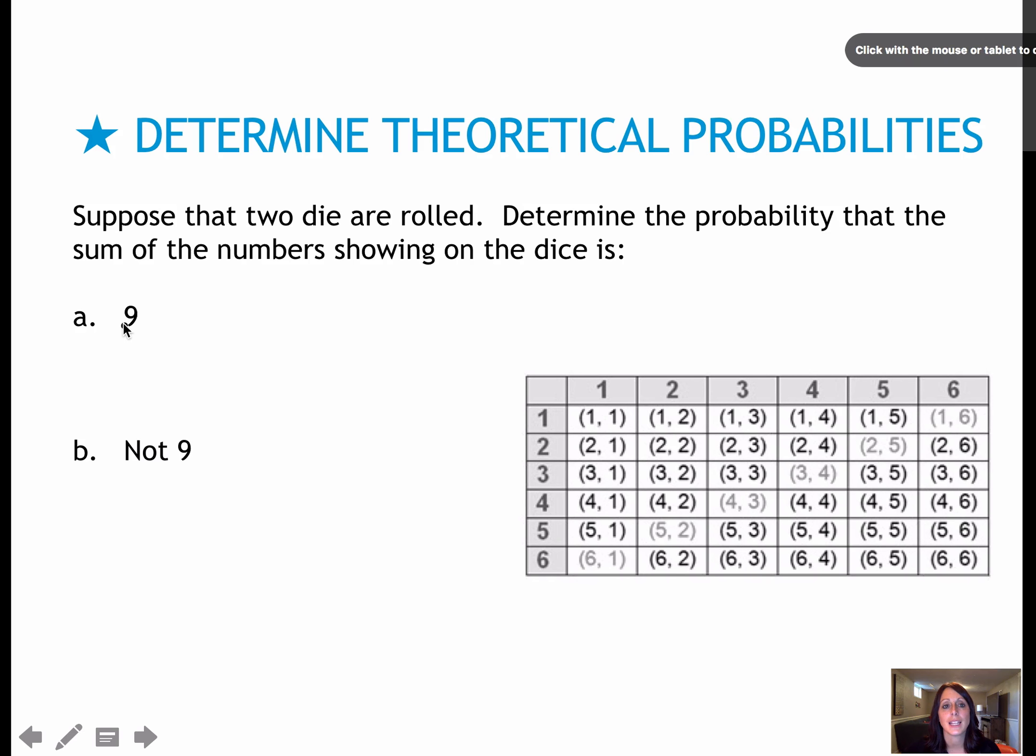So to find the probability that the sum is 9, P(sum of 9), I have to find how many add up to 9. So this whole diagonal is 8. Looks like this whole diagonal, the sum of the digits is 9. So that means there are 4 out of 36 total options, which means 1 out of 9 total options if I reduce.